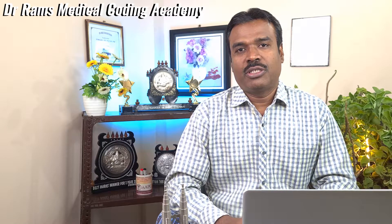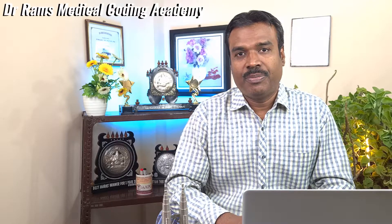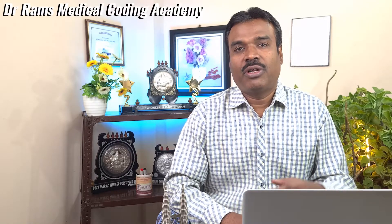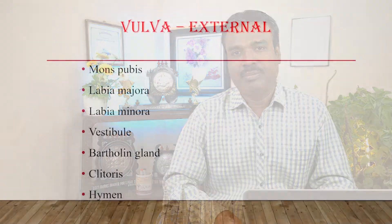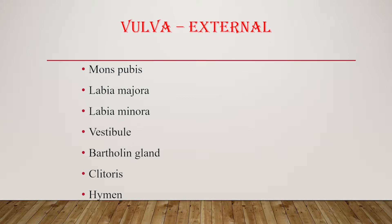Before moving on to the procedures, let's talk about the organs that constitute the female reproductive system. We can divide the organs as the external genitalia and the internal genitalia. We have a special term for the external genital organs in the female which we call the vulva. Now let's see what these organs are. We have the pubic mound, or mons pubis.